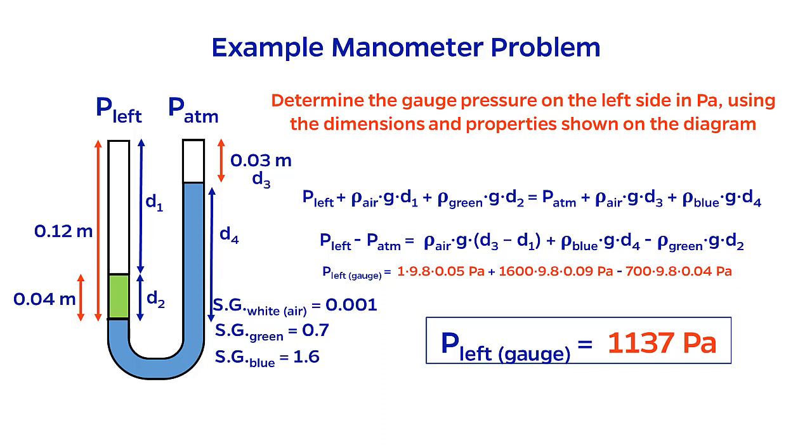Although this number seems large, bear in mind that this is only about 1% of atmospheric pressure. This is a major benefit of manometers. They can be very precise at measuring small pressure drops.